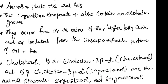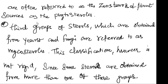Ergosterol and stigmasterol are examples of plant steroids. Steroids obtained from animal sources are referred to as zoosterols, and those from plant sources as phytosterols. A third group of sterols obtained from yeast or fungi is referred to as mycosterols. This is the classification of sterols; however, it is not rigid since some sterols are obtained from more than one of these groups.